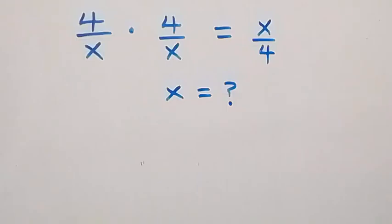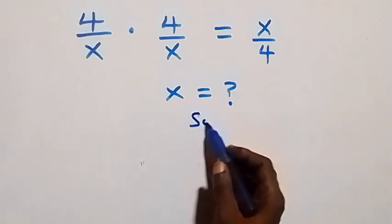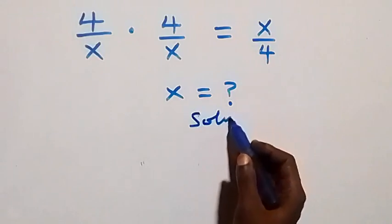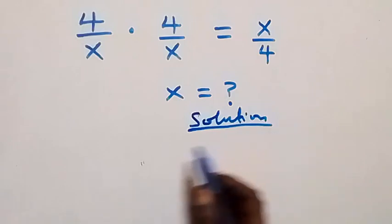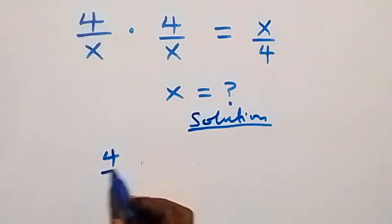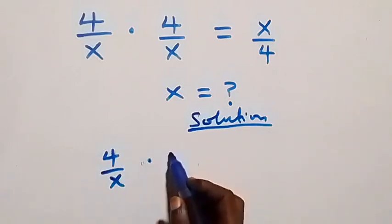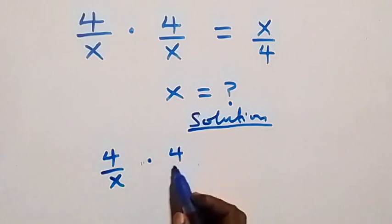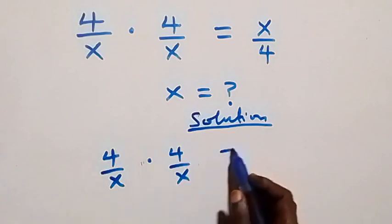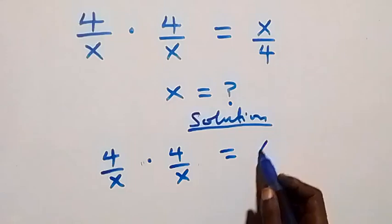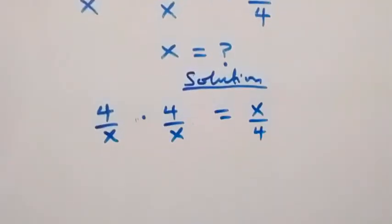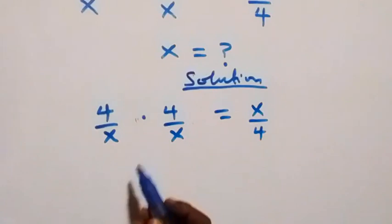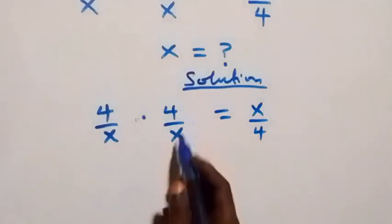Hello, you are welcome. Here is a nice algebra problem to solve. From what is given, which is (4/x) times (4/x) equals x/4, we can rewrite this and multiply 4 times 4.